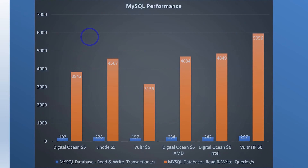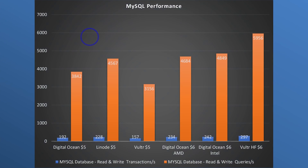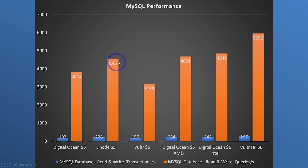MySQL, as we talked about, is very important for WooCommerce cart and checkout. Here we've got Vulture High Frequency taking out the highest performance rating, followed by DigitalOcean's new premium droplets. Vulture High Frequency is still the top, and these new DigitalOcean $6 options are also very good. The $5 options are a little bit behind — Linode is actually pretty close, but DigitalOcean and Vulture's $5 options are a little bit slower. All of these do pretty well, but you'll notice that bit of boost you get when you go with Vulture High Frequency.